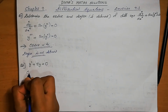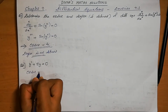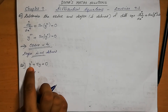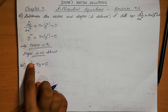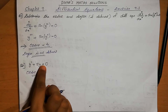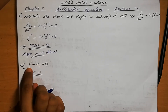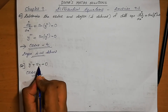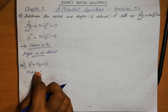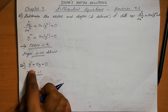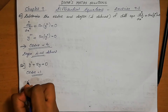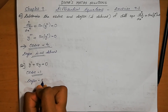The highest order derivative present in y' + 5y = 0 is 1, so the order is equal to 1. This equation is in the form of a polynomial. The highest power raised to y' (i.e., dy/dx) is 1, so the degree is equal to 1.